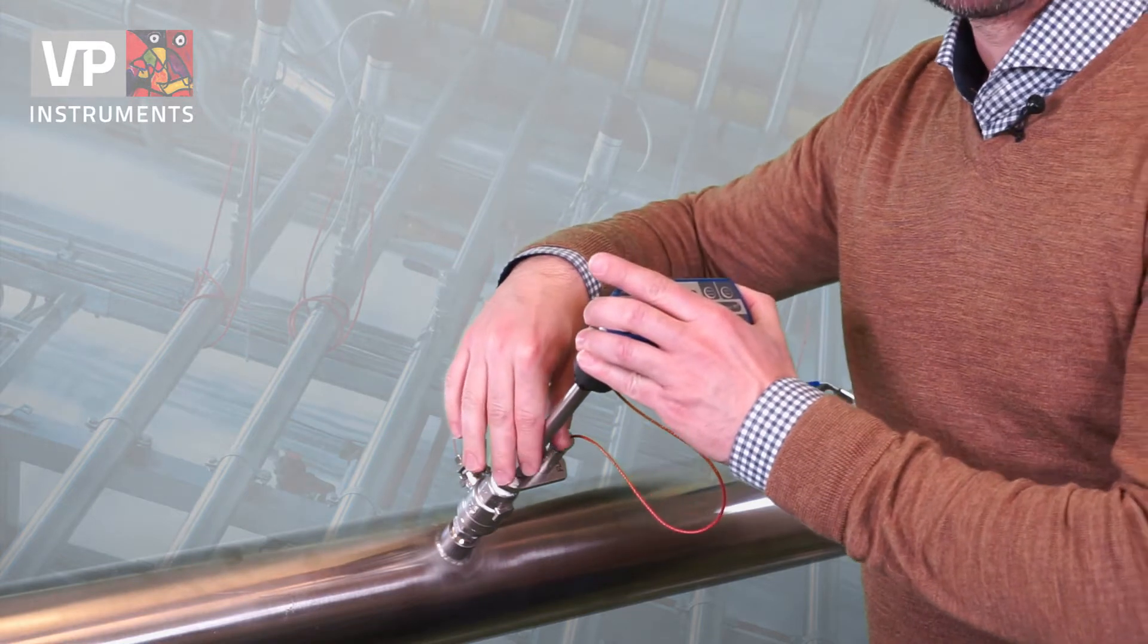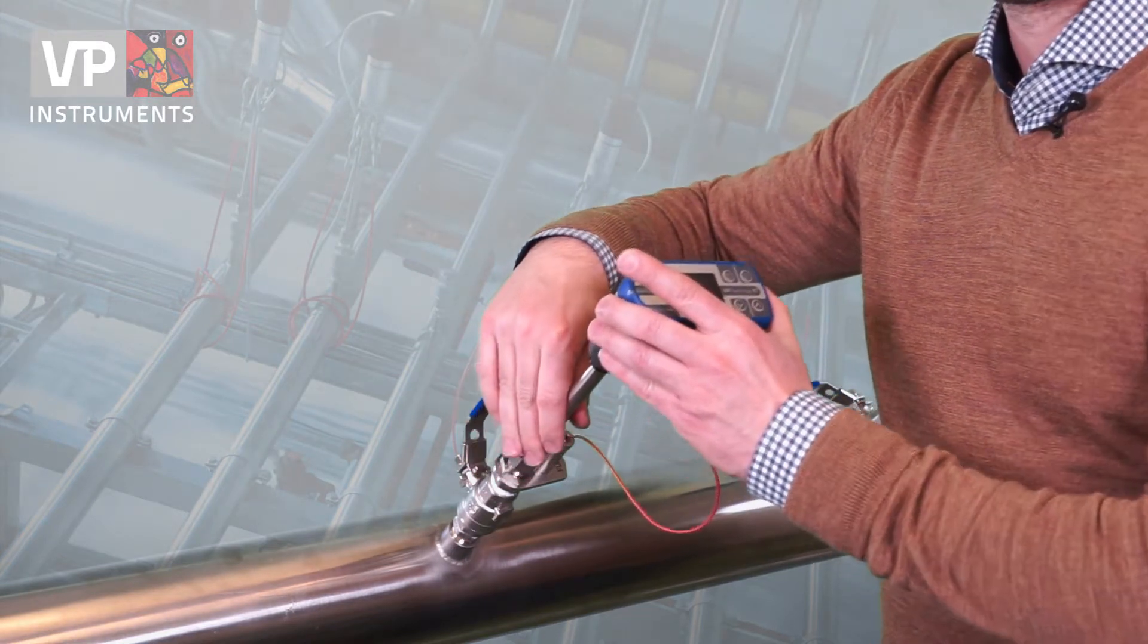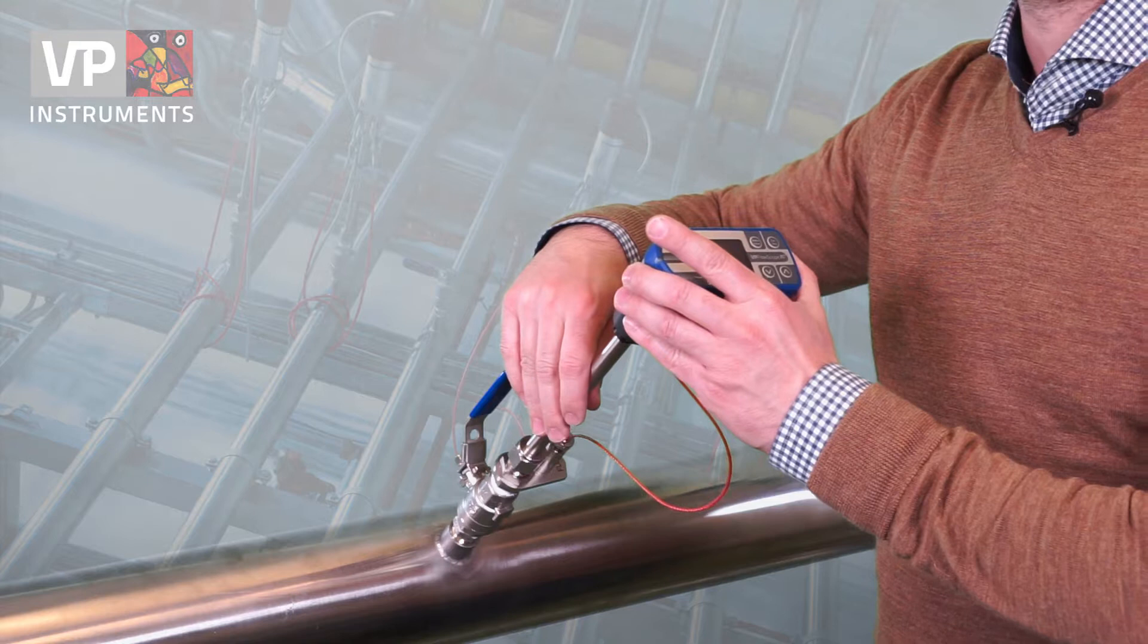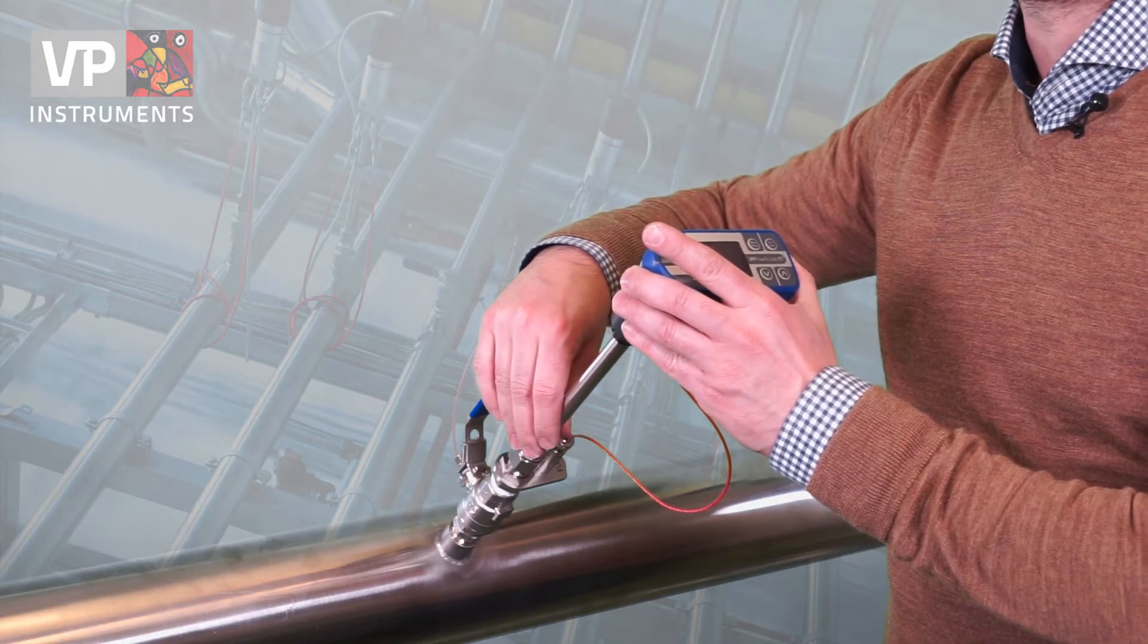We slide it inwards, let it touch the bottom, and then we raise it half a diameter up. You can use a measurement device to accurately be in the center of the pipe.